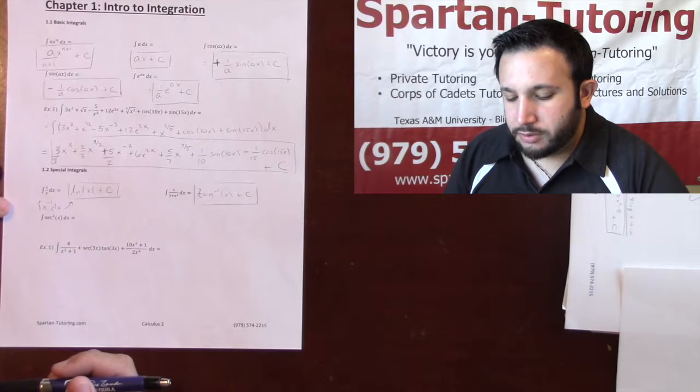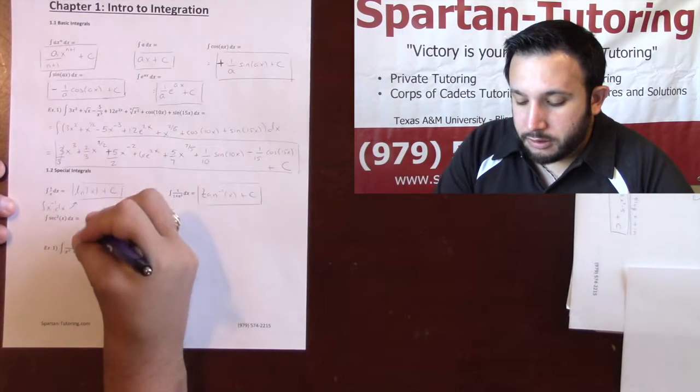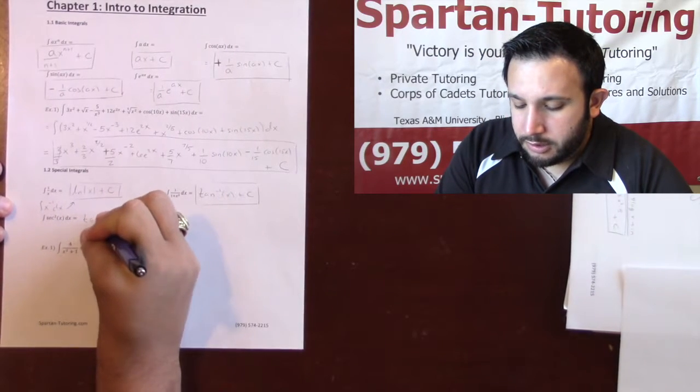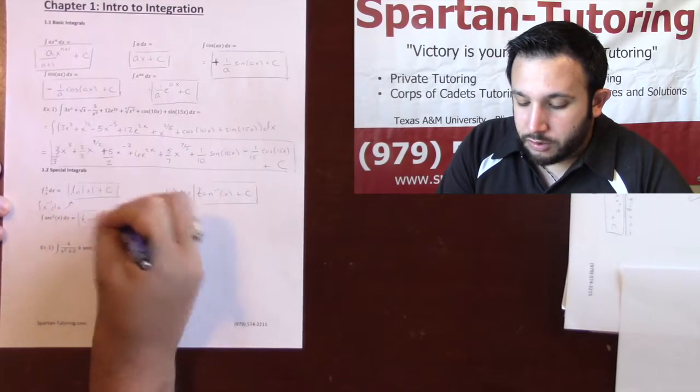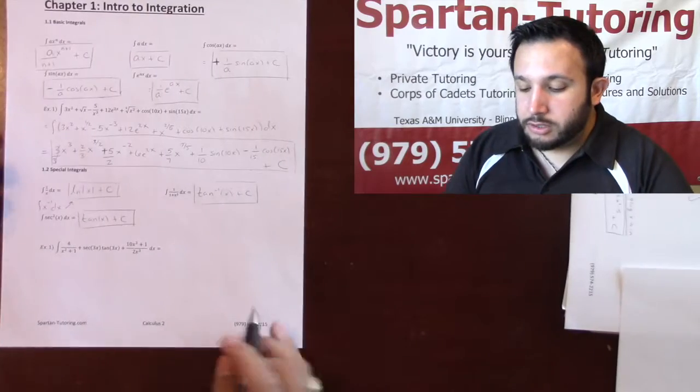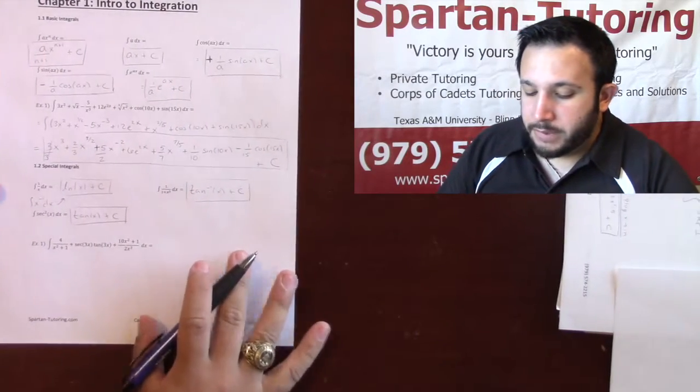And likewise over here, the integral of secant squared, this one in particular isn't special, but we need to ask ourselves, well, the derivative of what was secant squared? Well, the derivative of tangent was secant squared, which is why the integral of secant squared is tangent. So just be aware of that.